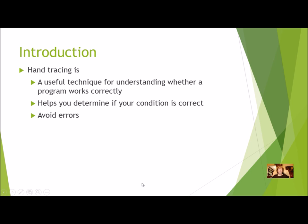Why do we do hand tracing? Hand tracing is a useful technique for understanding whether a program works correctly. You're going to do hand tracing not just for loops but for all kinds of things in programming. Specifically for loops, it's going to help you determine if your condition is correct and help you avoid errors. If something is not going correctly when you're programming, or if you just want to check before you even start, try doing some hand tracing.